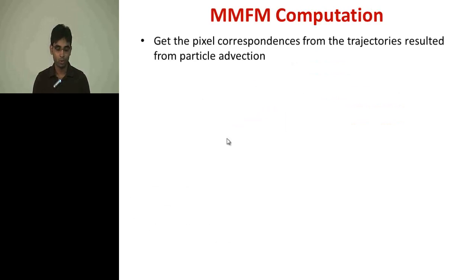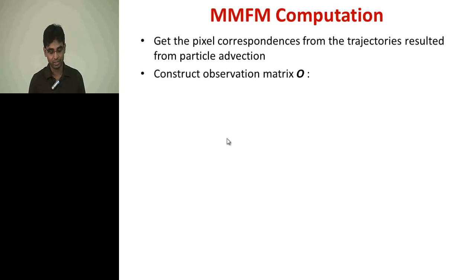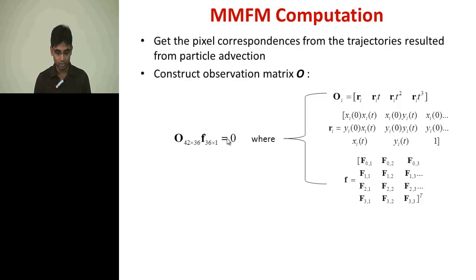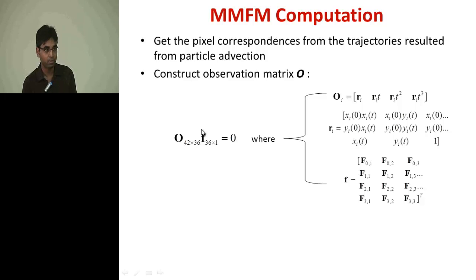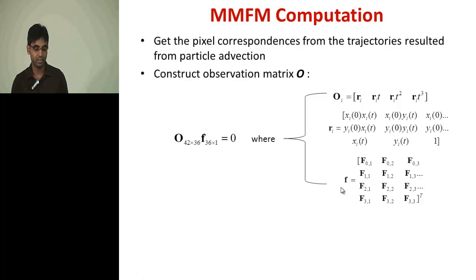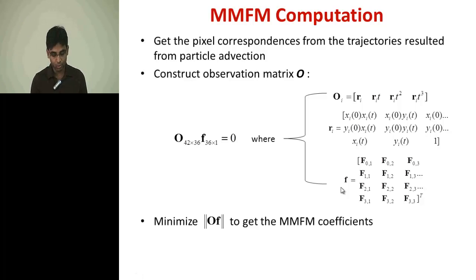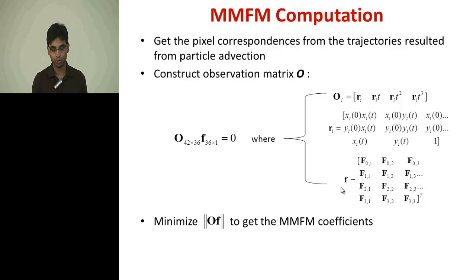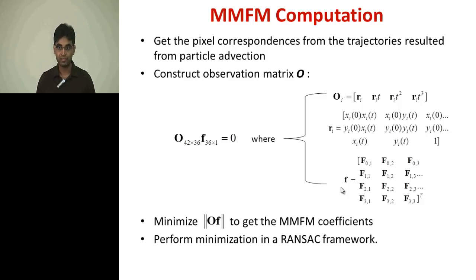For computation of the MMFM, we take these point correspondences and construct the observation matrix, such that the multiplication of the observation matrix and the MMFM coefficient vector should ideally equal zero. One row of this observation matrix looks like the first two equations shown, where F is the 36 coefficients arranged as a column vector. We minimize the product of the observation matrix by F to get the MMFM coefficients, and do so within the RANSAC framework, as is done in the eight-point algorithm.